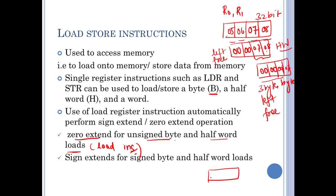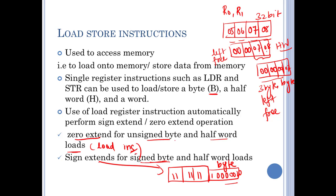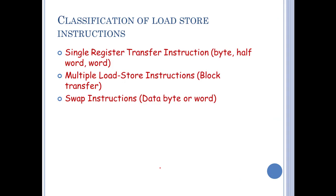Zero extension and sign extension operations apply only to load instructions, specifically single register instructions. The general classification of load and store instructions has three categories: first is single register transfer instruction, meaning using any one register from R0 to R12, you can transfer data between memory and registers. You can transfer a byte, a half word, or a word.